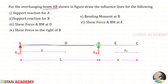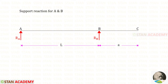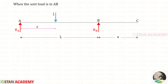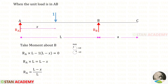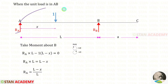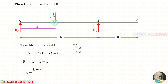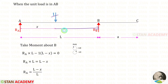A beam AB is given with overhanging. First let us draw the influence lines for the support reactions RA and RB. We have to keep the unit load between A and B at a distance of x from A. To find RA, we have to take moment about B. We have to follow the right hand side rule — clockwise will be positive and anti-clockwise will be negative.